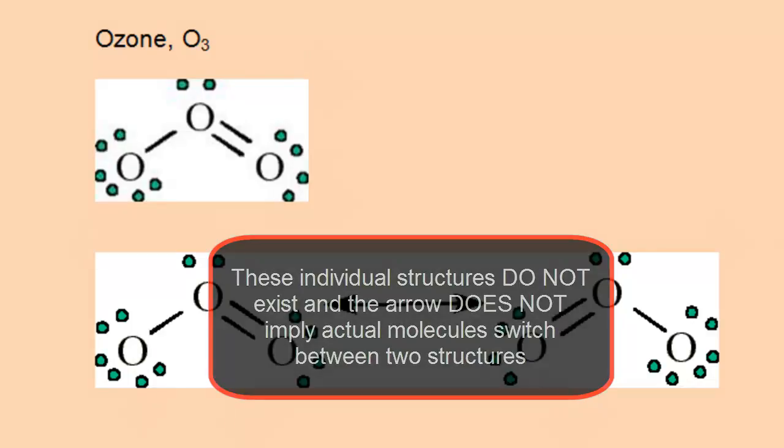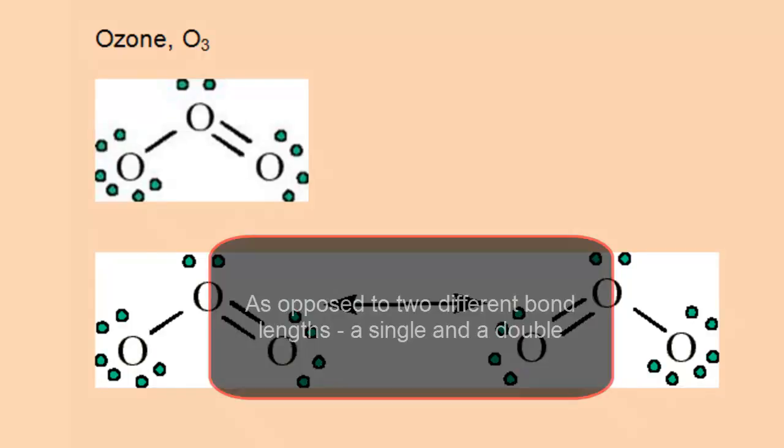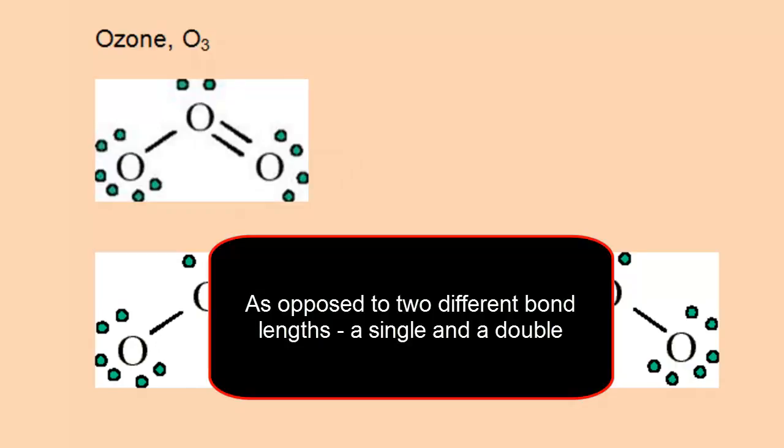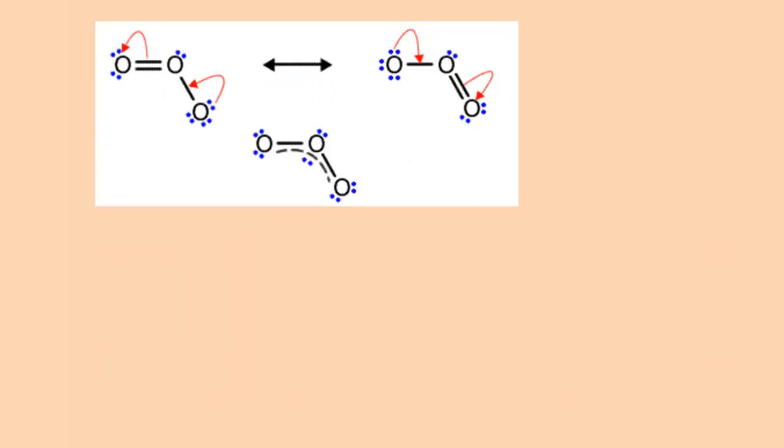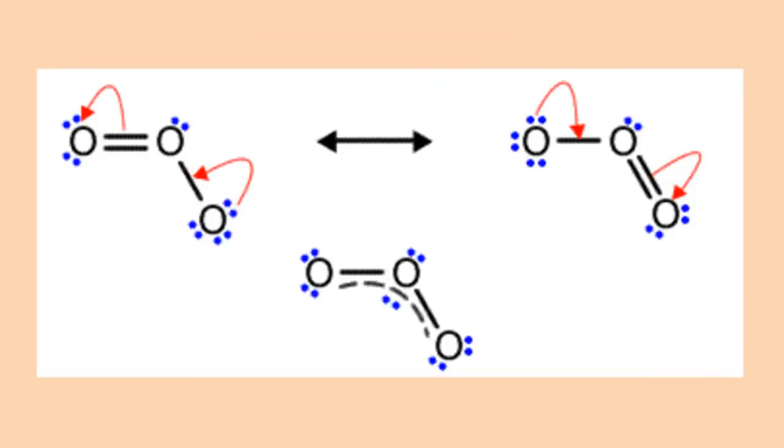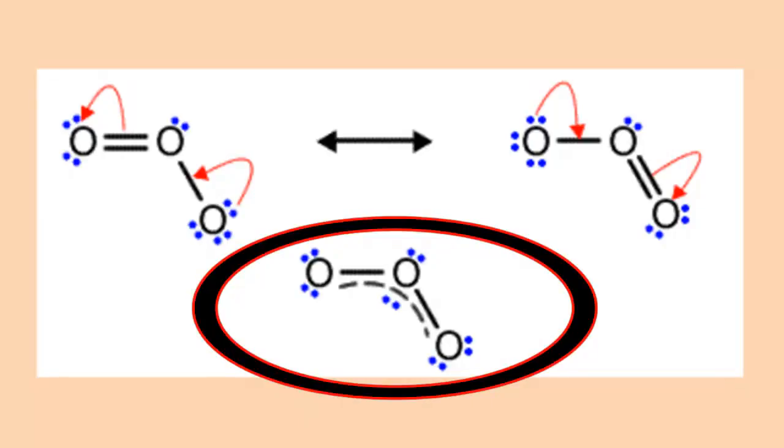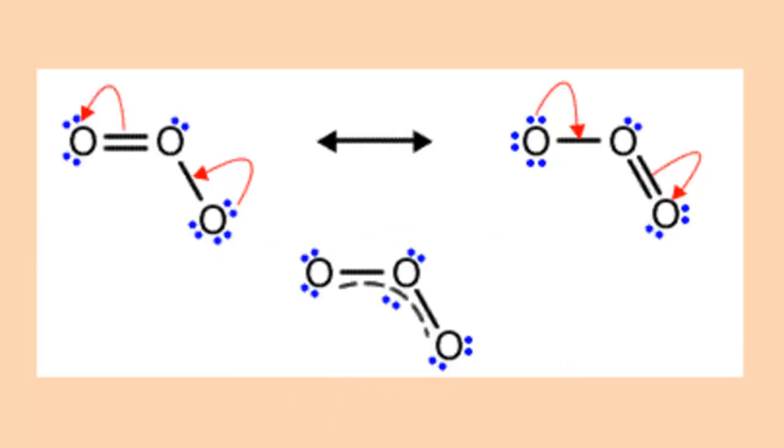Data from experiments show the bond lengths between the oxygens are all the same. This figure shows the two fictitious resonance structures for ozone, and below the two structures is a realistic structure. Notice the dashed line and the single bonds. This alternative Lewis structure with the dashed line is consistent with experimental data.